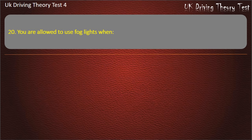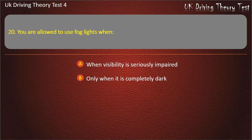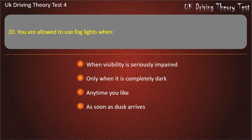Question 20. You are allowed to use fog lights when: visibility is seriously impaired; only when it is completely dark; anytime you like; or as soon as dusk arrives. Answer: When visibility is seriously impaired.